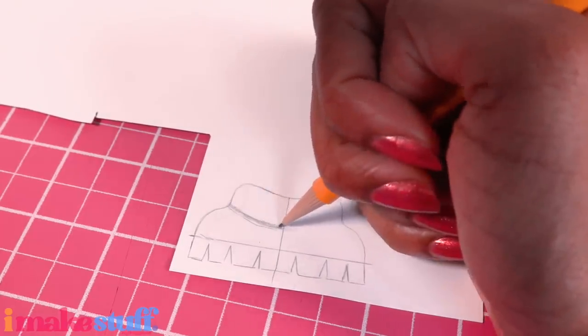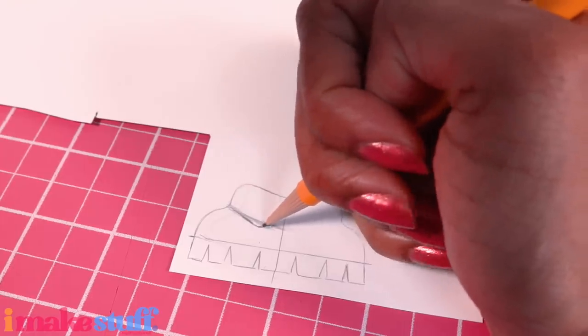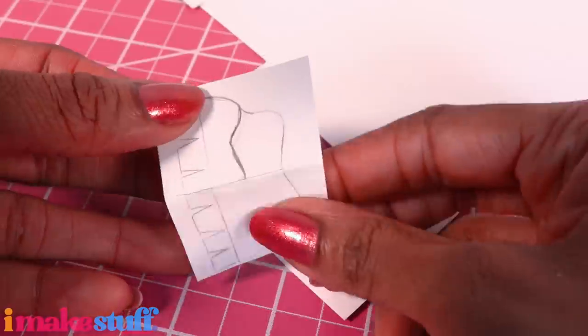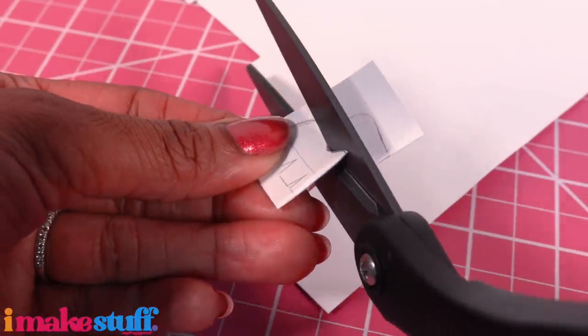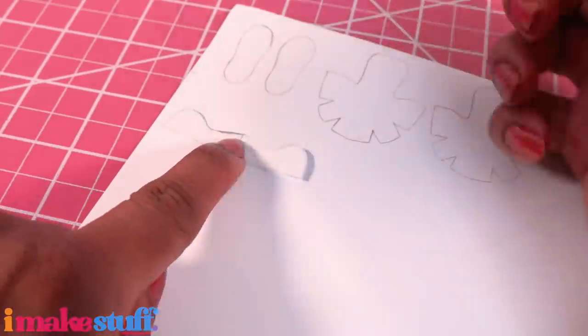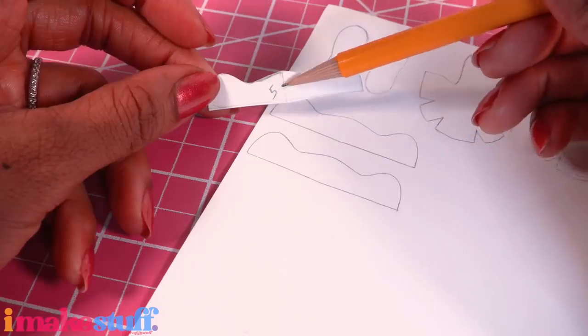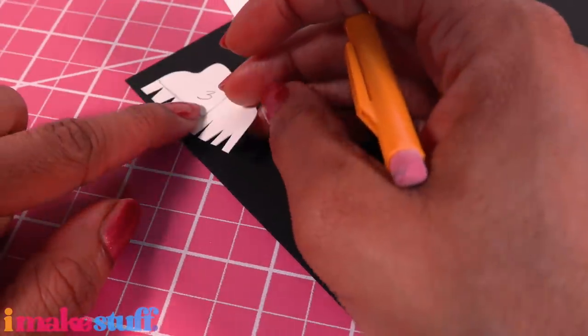Fold it in half and cut on the line drawn. I cut off the bottom tabs and trace it onto white. Name the pattern number five. We're gonna need to cut pattern three out of black, so we're gonna trace it onto black cardstock, but we won't need the bottom tabs.